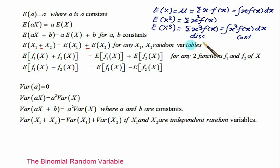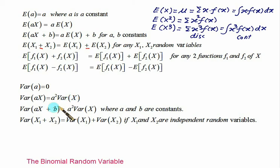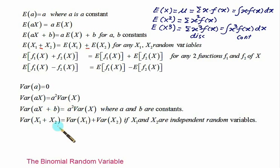For variance properties: the variance of any constant term is always equal to zero. Var(ax) equals a² times Var(x). And Var(ax + b) equals a² times Var(x), since Var(b) equals zero because b is a constant, so only the term a²·Var(x) remains.